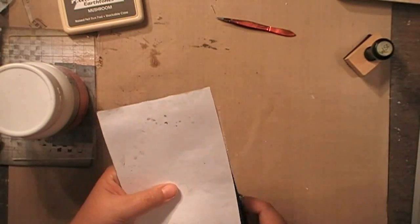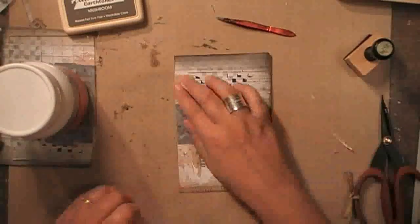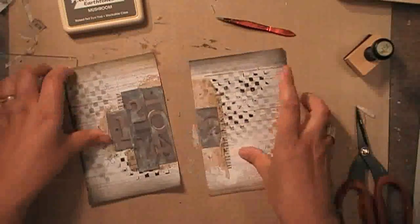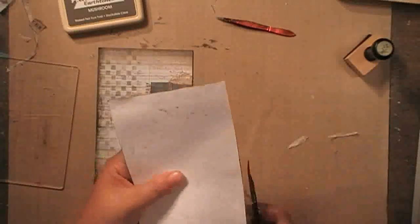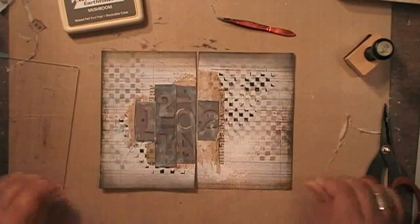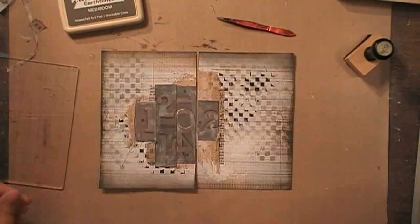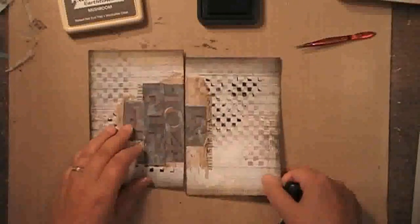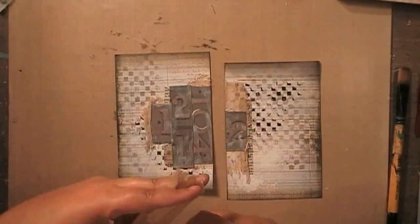I'm trimming the excess cambric away, as I want this spread to look as if it was one page that has been cut in half, so that there is a continuity between both sides, and adding just a tiny bit of distress ink in the middle.